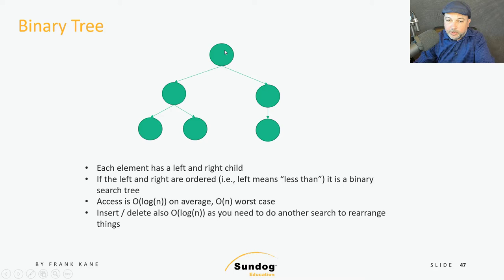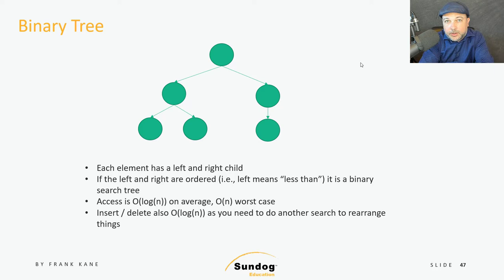Think about it: if I start with the number one and insert the number two, that's going to go to the right. If I then insert three, that will go to the right again. Four goes to the right again, five goes to the right again. So if I'm inserting things in sorted order, I'm just going to end up with a singly linked list, which is not a particularly efficient structure for searching. So it's good to know that O(log n) represents the average case, but O(n) is really the worst case — especially if you're dealing with sorted data from the get-go.